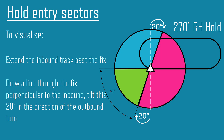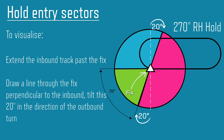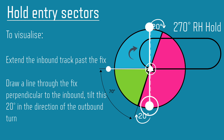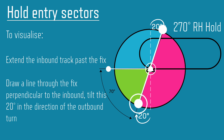What are hold entry sectors? The aim of a hold entry is to establish the inbound track before the fix. Depending on where you are approaching from, the most efficient way to do this varies. ICAO has made this easy for us by determining three distinct sectors. To visualize them, extend the inbound track past the fix, draw a line perpendicular to the inbound through the fix, then tilt this 20 degrees in the direction of the outbound turn. You now have your three sectors.